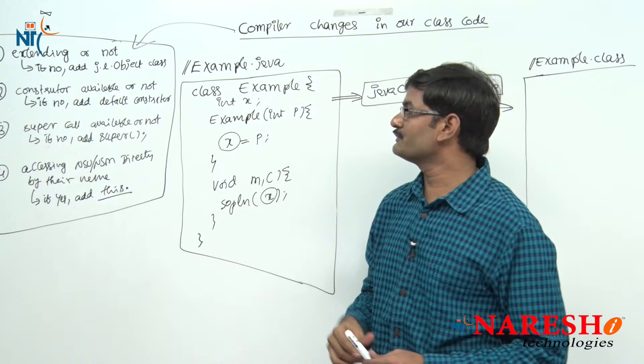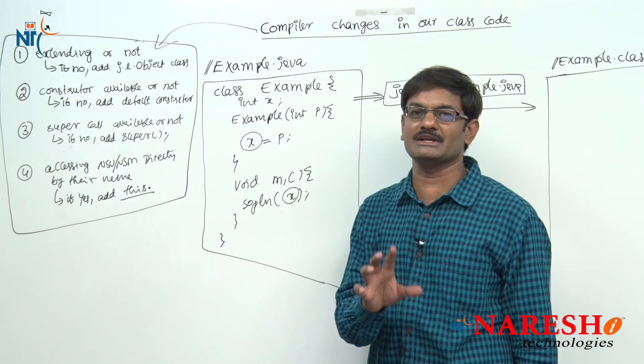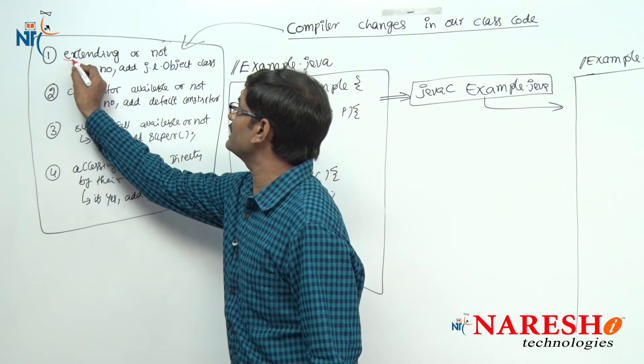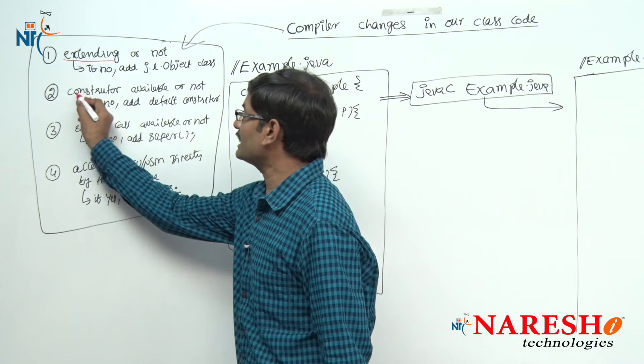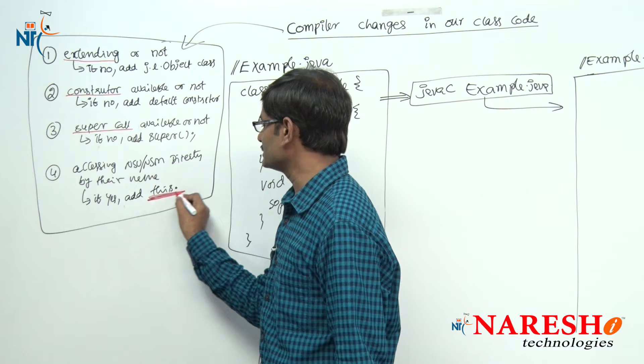These are the four changes compiler will do in our class. If you know these points, answering the questions in the written test is very easy. If you do not remember these four points, you will definitely give wrong answers in the exam. The four changes are: number one from super class, number two from constructor, number three from super call, number four from this dot.